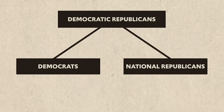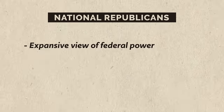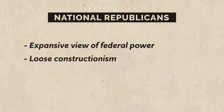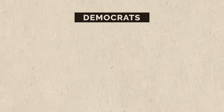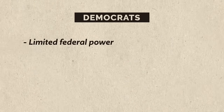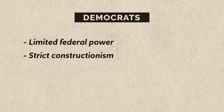The first faction was known as the Democrats, and the second was known as the National Republicans. These aren't new political parties — those will come later — but just two rival factions within the Democratic-Republican Party. The National Republicans had a more expansive view of federal power, taking up old Federalist convictions and loose constructionism, which is a way of interpreting the Constitution more loosely. The Democrats, on the other hand, stood for limited federal power and strict constructionism — a tighter interpretation holding that the federal government can do nothing not explicitly written in the Constitution.